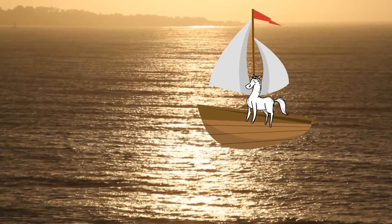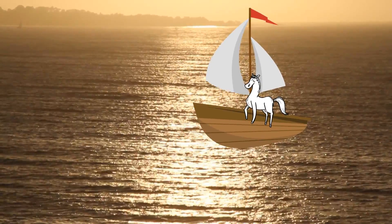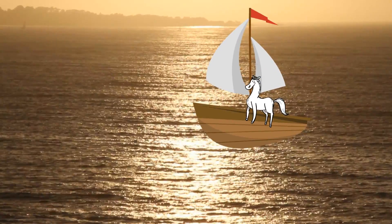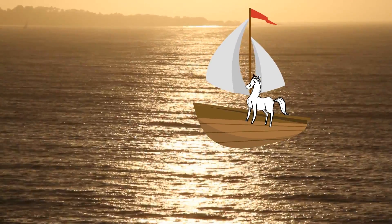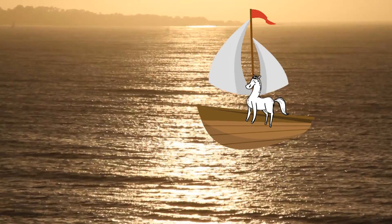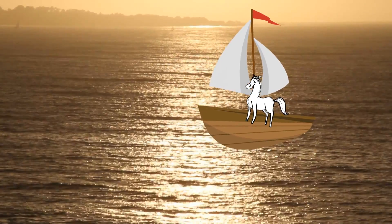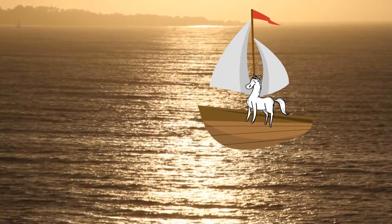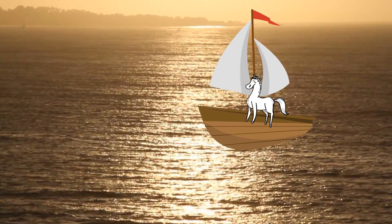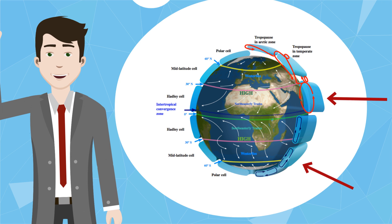According to legend, this name was given to these areas when sailing ships carried horses from Europe to the Americas. When the ships were stuck in the windless area, horses were sometimes thrown overboard to save drinking water for the sailors. Remember, this is just a legend. Most of the world's deserts are located in the horse latitudes because the sinking air is very dry. So there we go — the major global winds of the world.